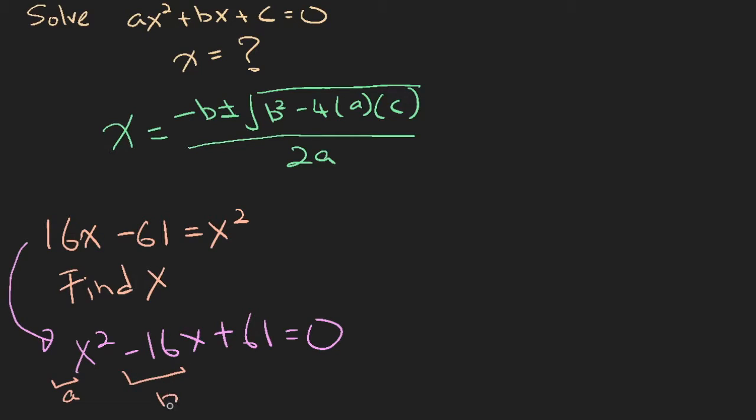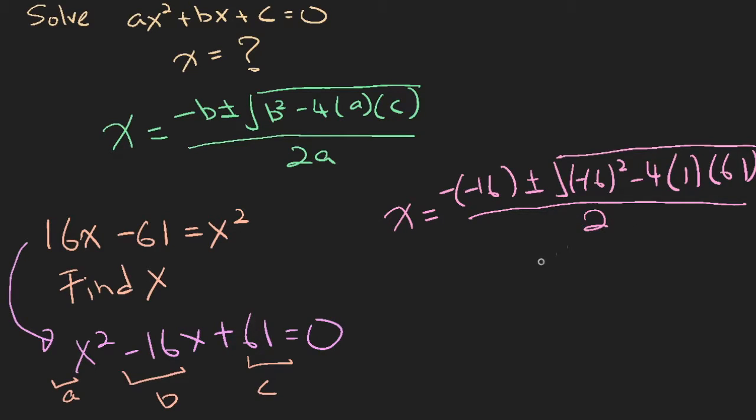Remember that the sign always sticks to the number, and C is 61. X is equal to minus minus 16, plus minus square root of minus 16 squared minus 4 times 1 times 61, divided by 2 times 1, which is 2.